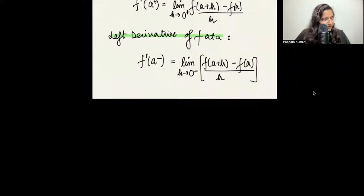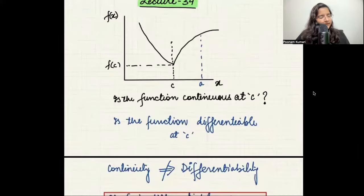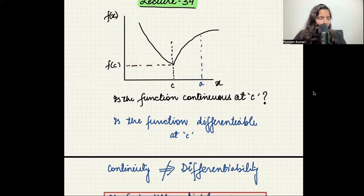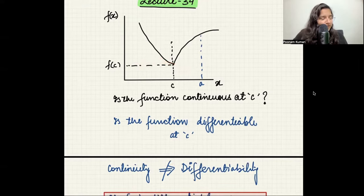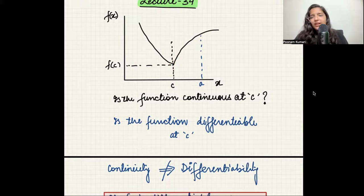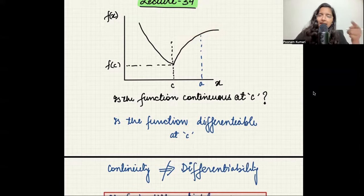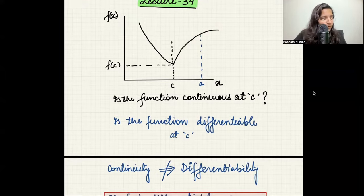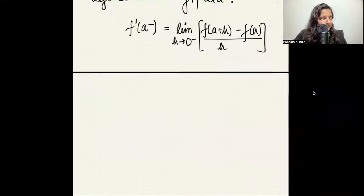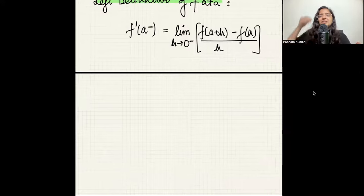As seen in our diagram, if you come from the left side, the tangent looks one way; from the right side, the tangent is different. For a smooth curve, both sides give the same tangent limit. Using this, we can define when a function is differentiable at a point. First condition: the function must be continuous at that point — if it's not continuous, there is no point discussing differentiability.